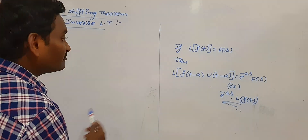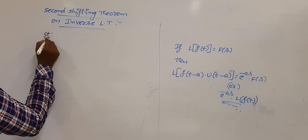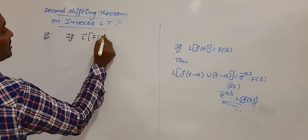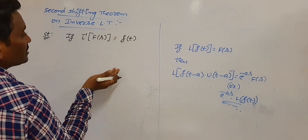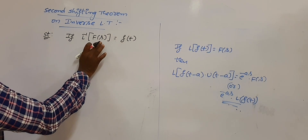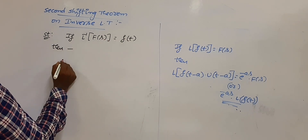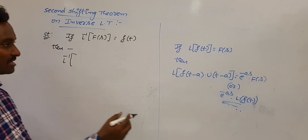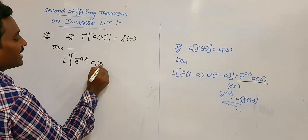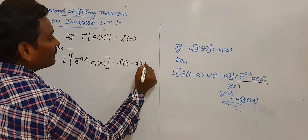Now we have to write exactly the inverse of this statement. If L inverse of F(s) is f(t) — we already know this. Suppose a function F(s) is given and its inverse Laplace exists finitely, then it is represented by f(t). Then, the exactly reverse statement is: L inverse of e^(−as)·F(s) is equal to f(t−a)·u(t−a).